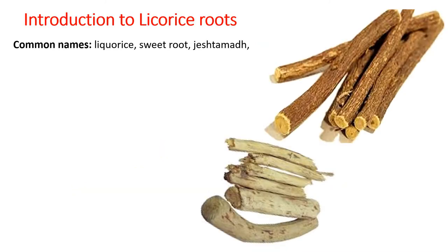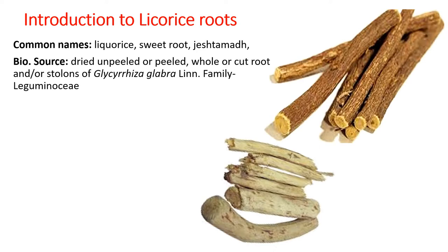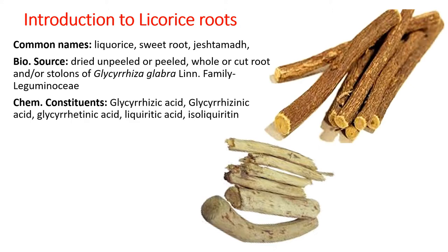Licorice roots are commonly known as jeshtamadhu, sweet root, or licorice. The licorice roots are obtained from a tree of the Leguminosae family, called Glycyrrhiza glabra. Most of the commercial roots may contain some stolon pieces as well, because stolons also contain the essential chemical components present in the roots. Glycyrrhizic acid, glycyrrhizinic acid, glycyrrhetinic acid, liquiritic acid, and isoliquiritin are the sweetness-providing chemical components of licorice, and these come under saponin glycosides.